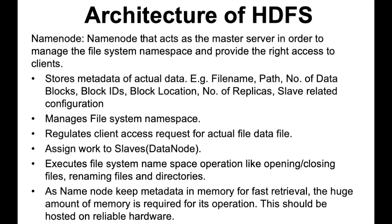There is one name node in HDFS and many data nodes. The name node executes file system namespace operations like opening, closing, and renaming files and directories. Another main responsibility of the name node is to keep metadata in memory for fast retrieval. A huge amount of memory is required for its operation, and it should be hosted on a reliable machine.